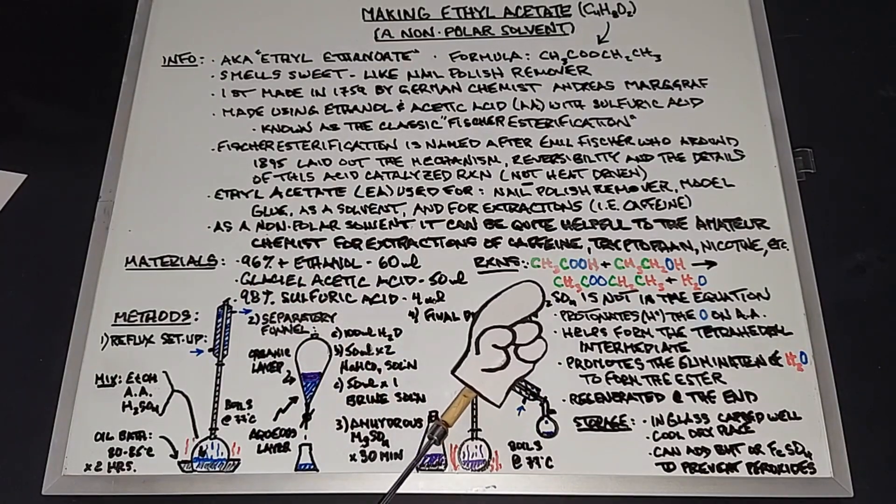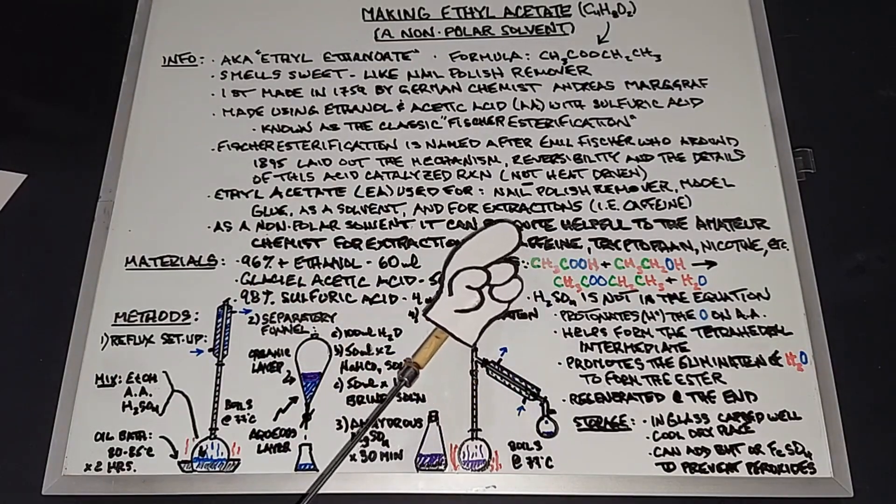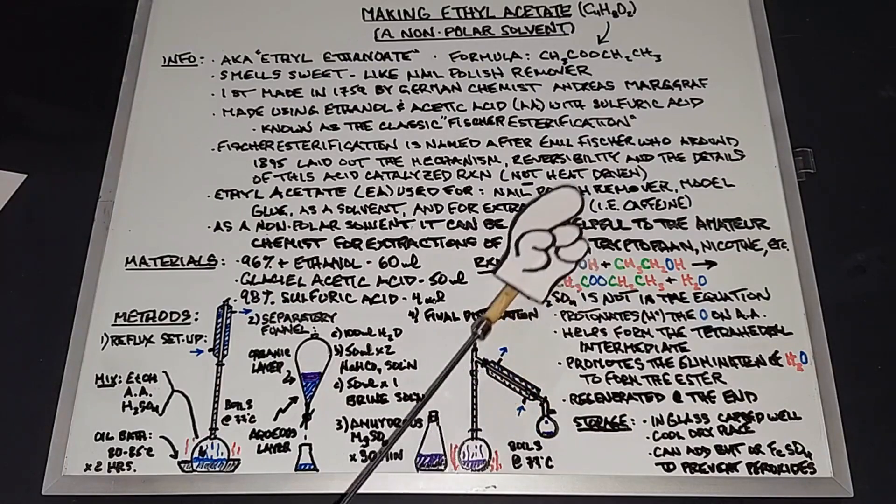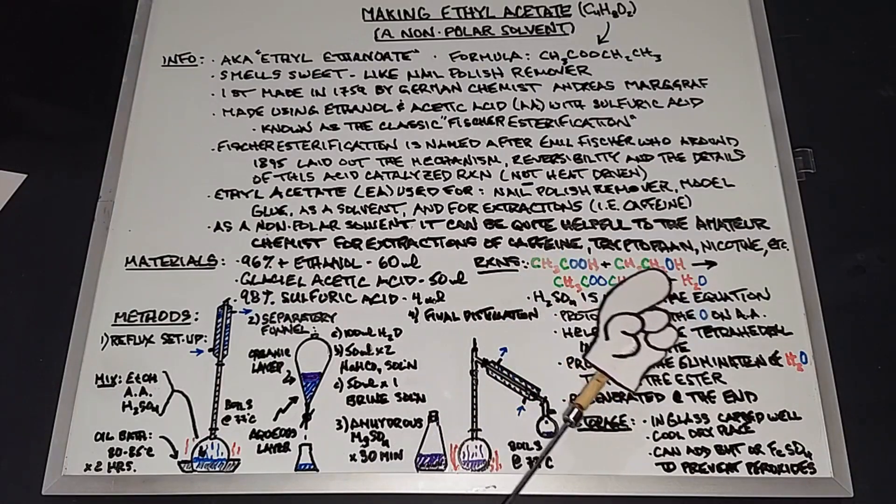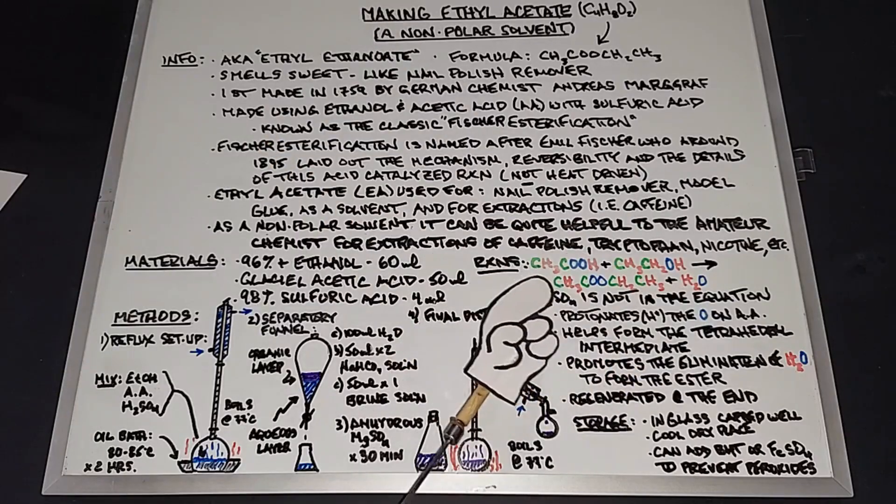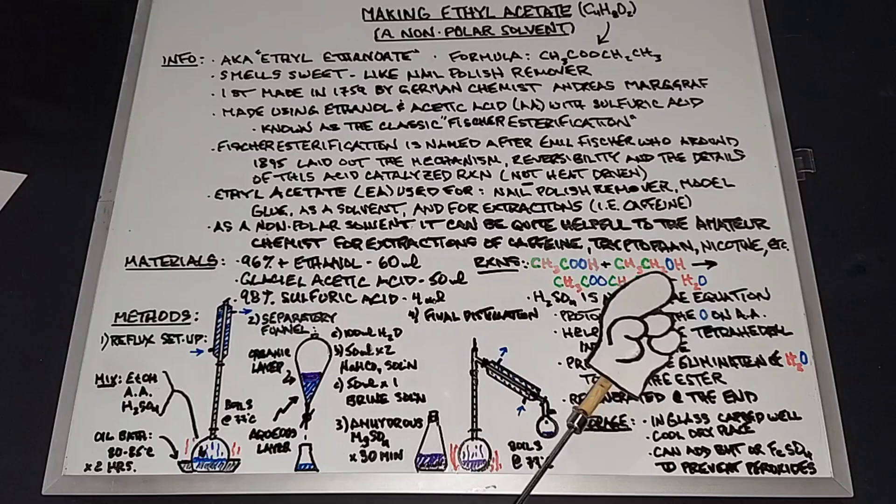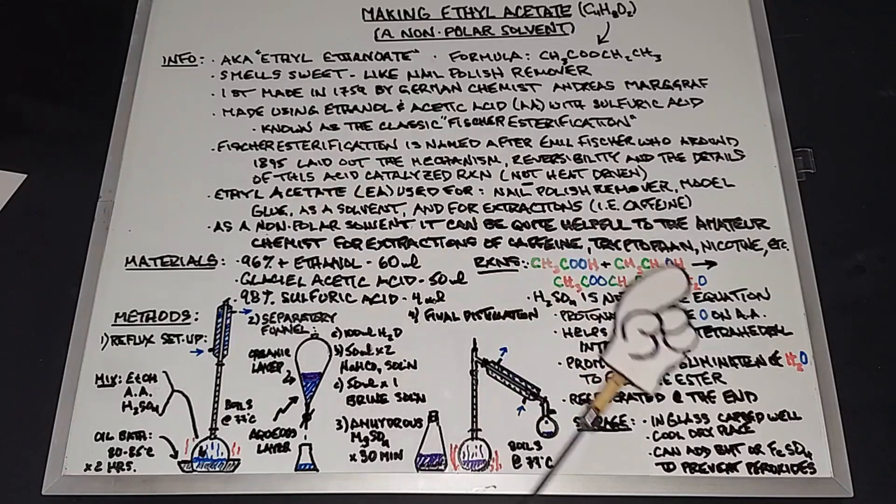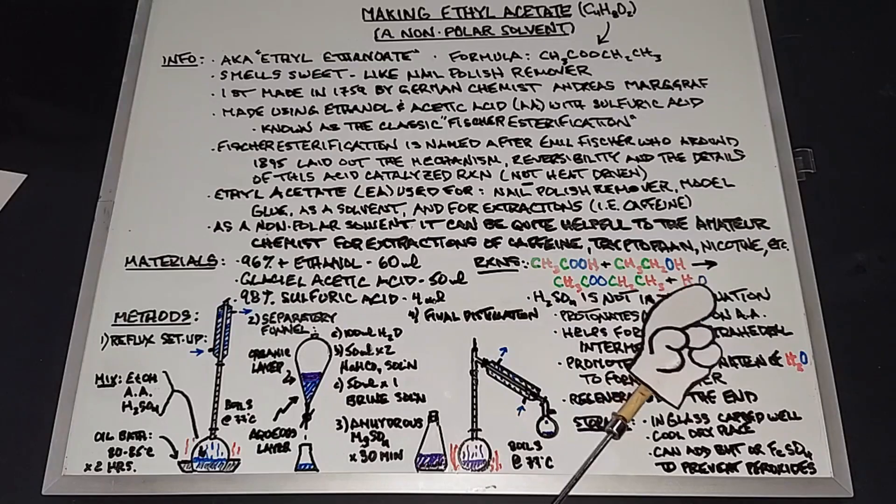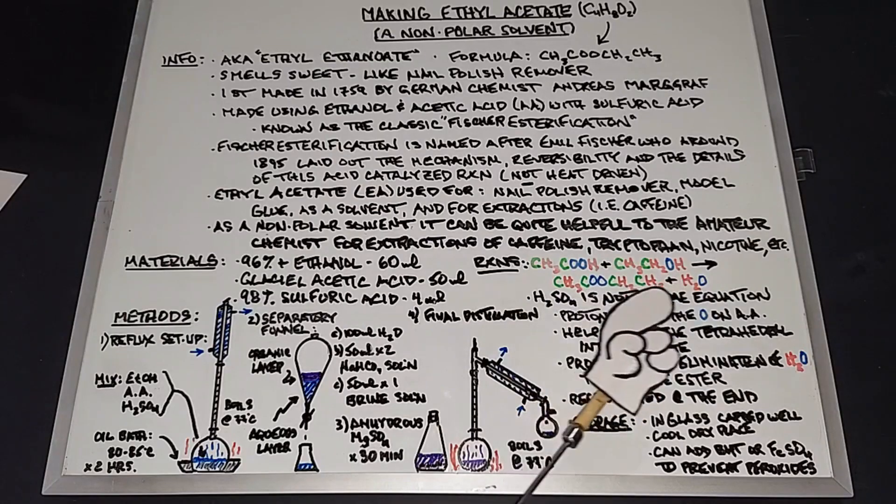Going over our reaction, the main one is acetic acid, CH3COOH, plus our ethanol, CH3CH2OH, yields our ethyl acetate, CH3COOCH2CH3, and water. That's another part of the Fischer esterification - it will always yield the ester and water.